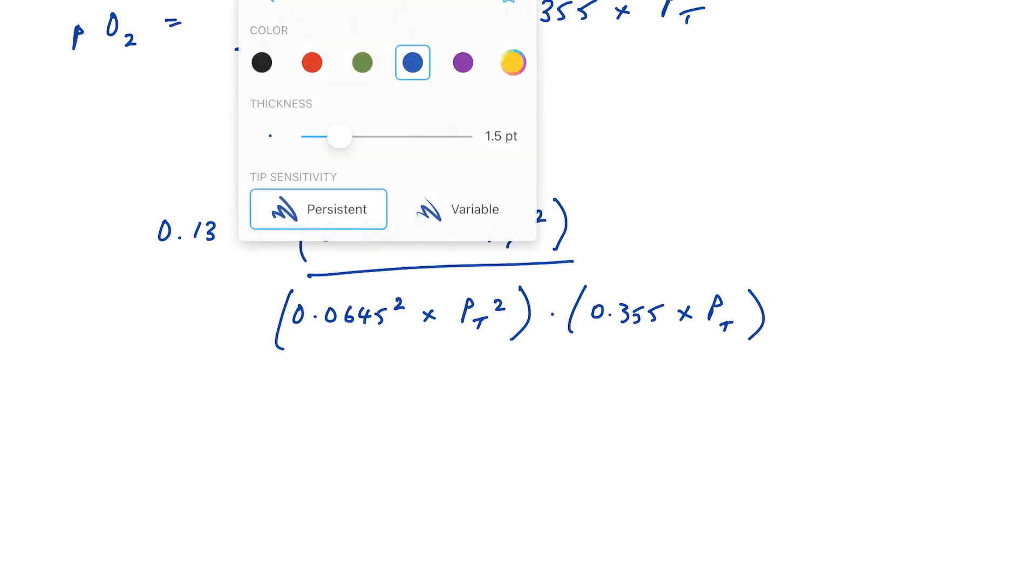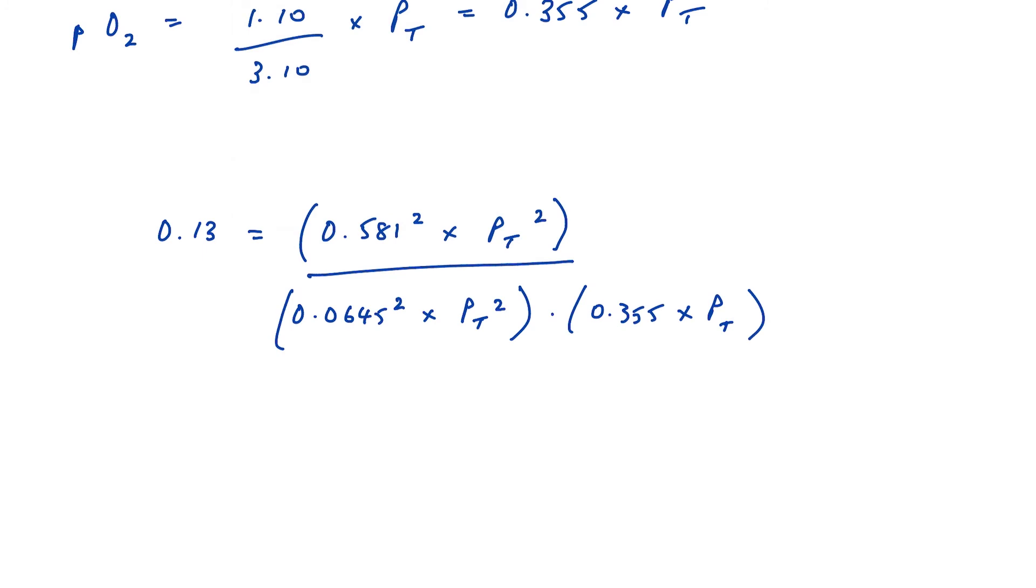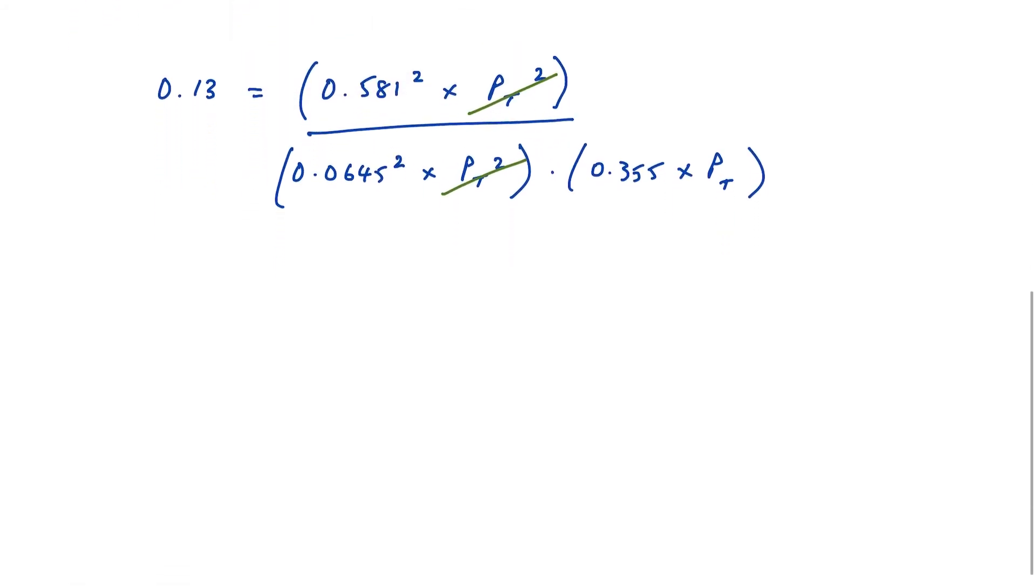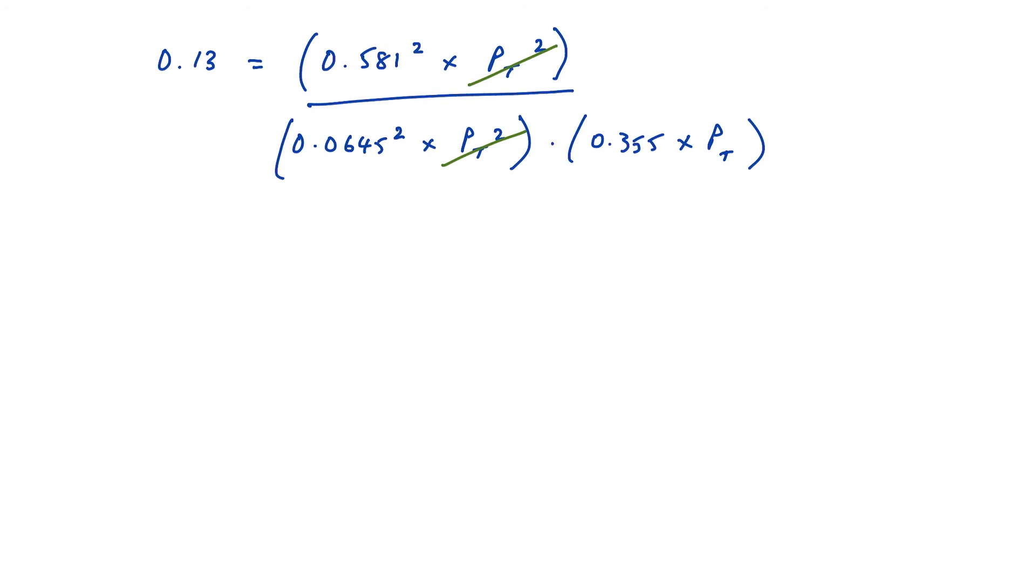Now, hopefully we can see that Pt squared over Pt squared cancels out. So you can see with these questions, although they look complicated, they're written in a way that are reasonably easy to sort out once you get going.